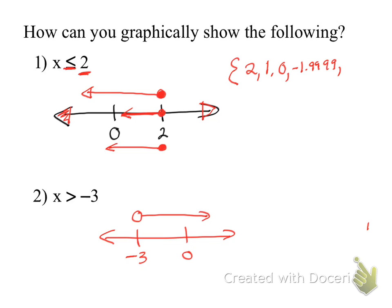Because it says 'equal to,' that two is also in this number set. And then the numbers go on and on forever — it's infinite. The reason why we do the number line is because it goes on and on forever. We don't want to list all the solutions that are less than or equal to two.